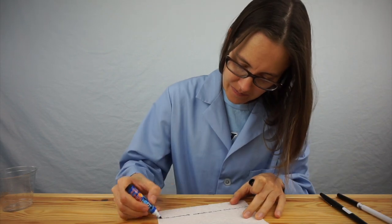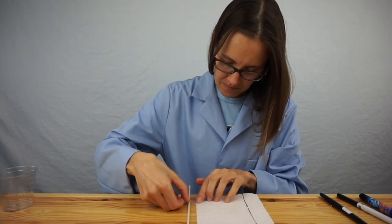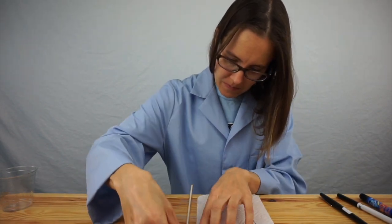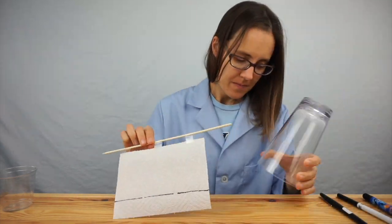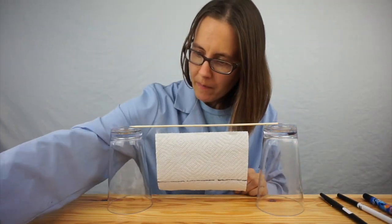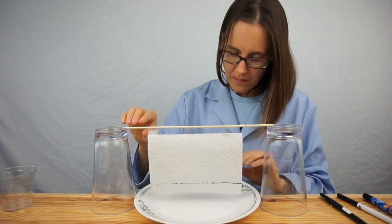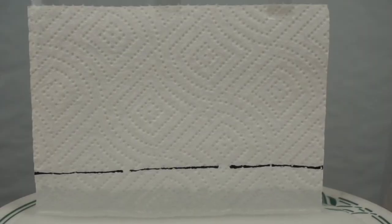In our first activity, I'll prove to you that black ink is not really black. To set it up, I draw a line on a paper towel with a marker. Then I arrange the towel so that only the very bottom of the towel will get wet, making sure that the marker line is above the level where the water will be.